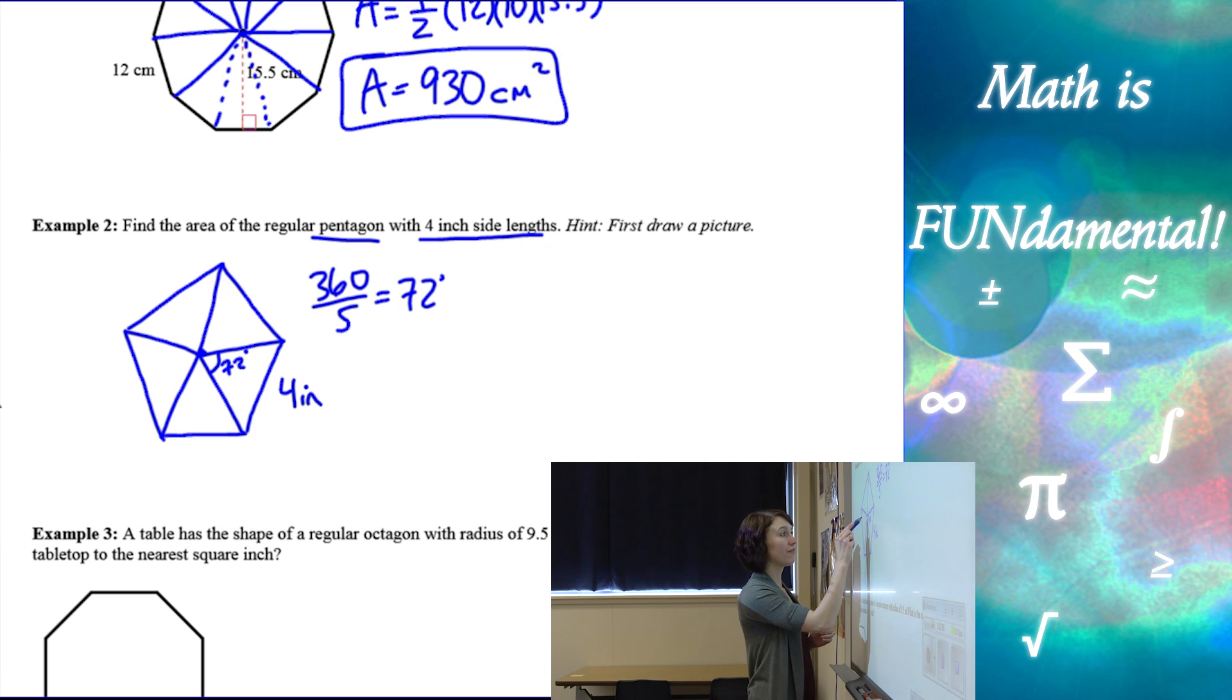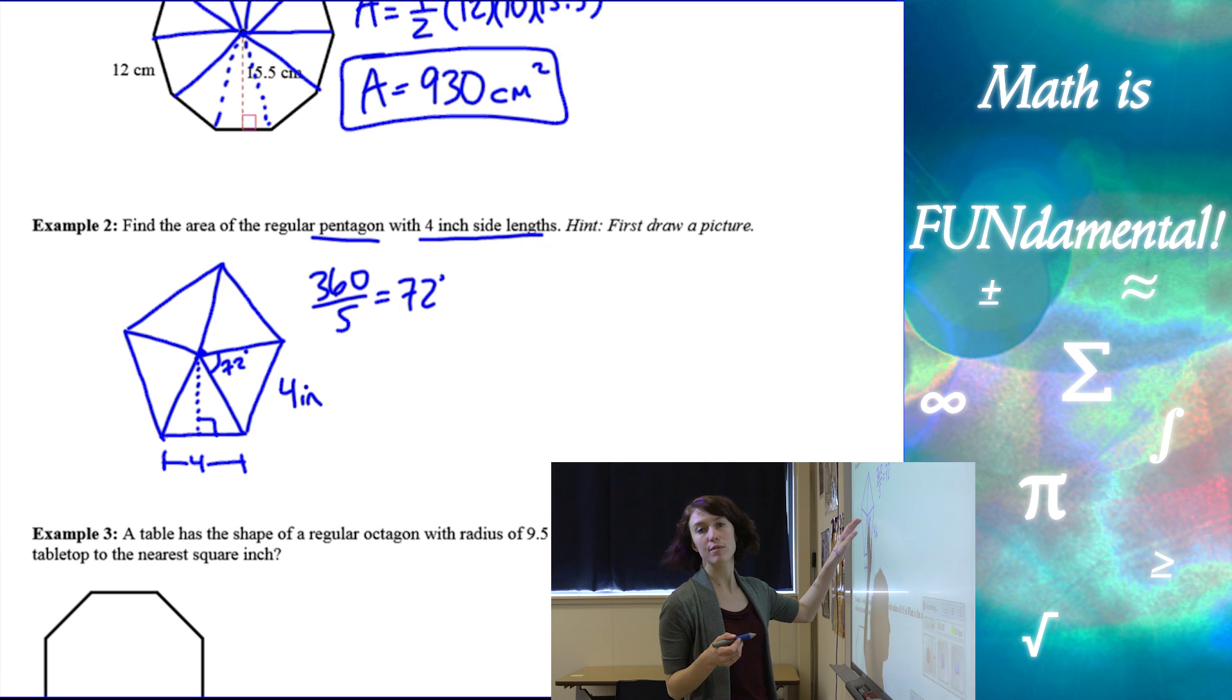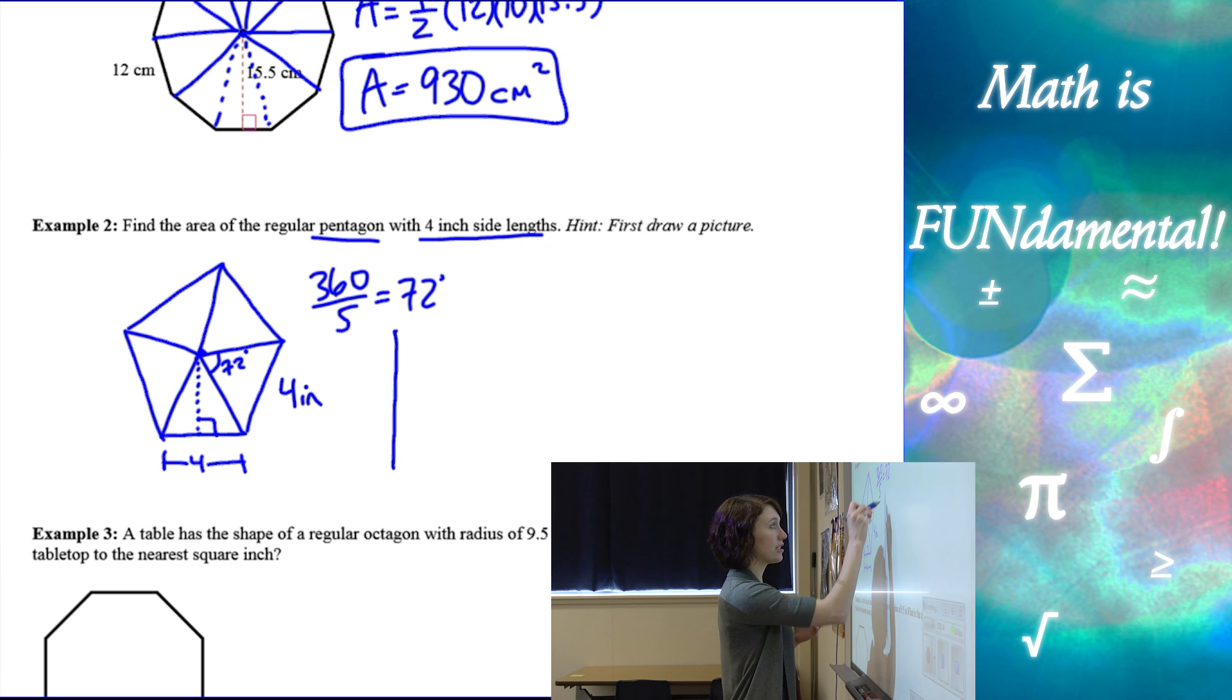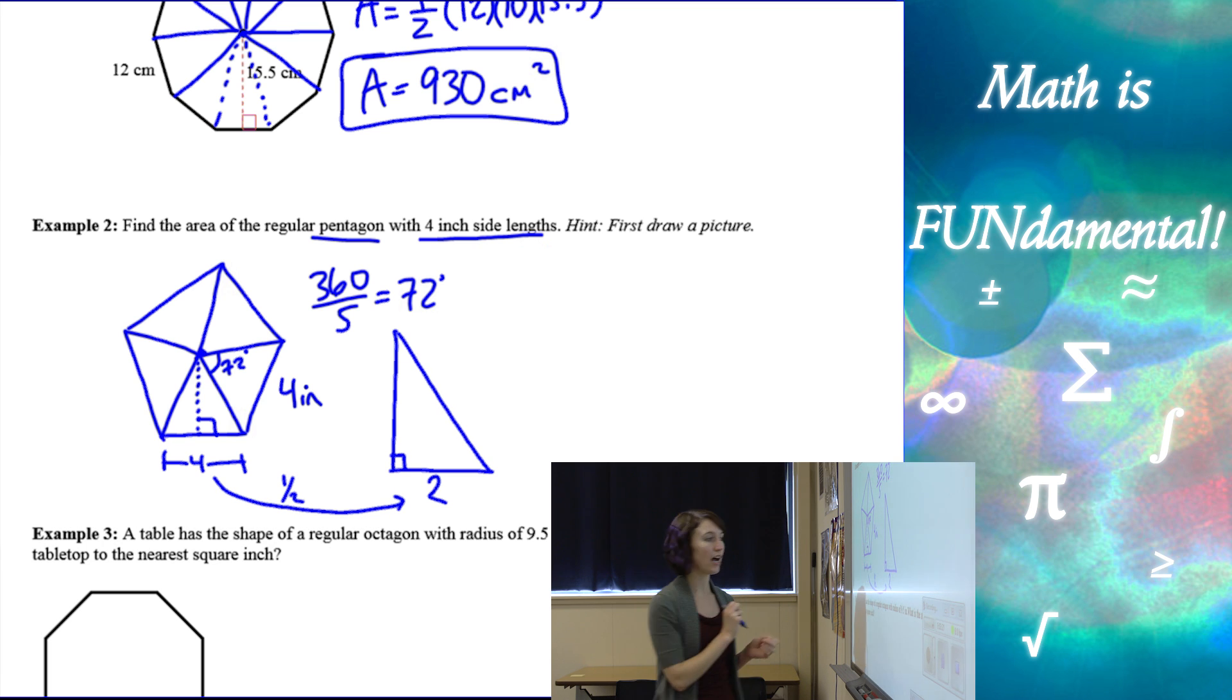Now if I want to find the area of this, I need to take each one of these triangles and split it in half so I can find the height of the triangle. I know the base length is four, but I need to find the height. Now if I split that in half, that angle that we just found, 72 degrees, gets split in half as well. So now I'm going to draw this right triangle a little bigger so I can work with it. This is going to be two because it's half of the entire side length, and then that angle, 72 degrees, when it gets split in half is going to become 36 degrees, and I need to find my apothem, or the height of my triangle.